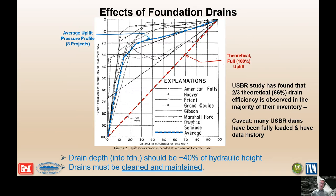The caveat is that many Bureau of Reclamation dams have been fully loaded with a long data history including high pools. For other dams — like some at the Army Corps — they may never have seen high pools or even elevated pools. So we end up having to take that drain performance data and project it forward to higher pools, which introduces more error and uncertainty. Another result of their assessment was that drains should be about 40% of the hydraulic height — so drain depth really helps with uplift reduction.